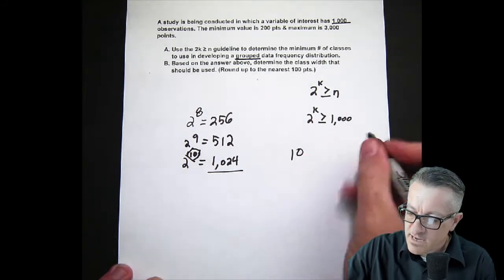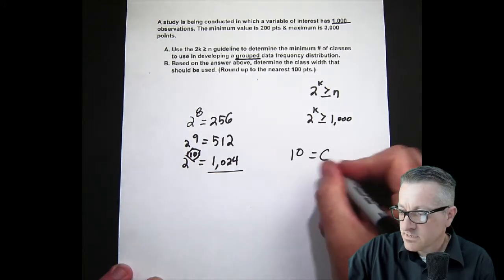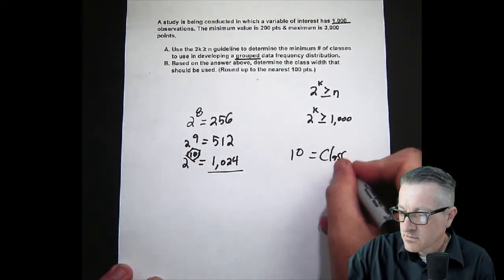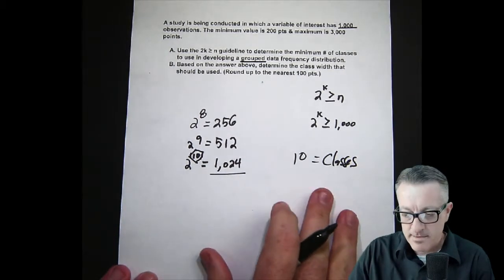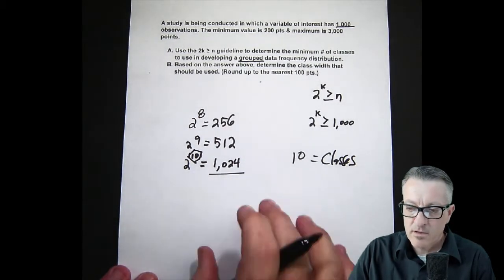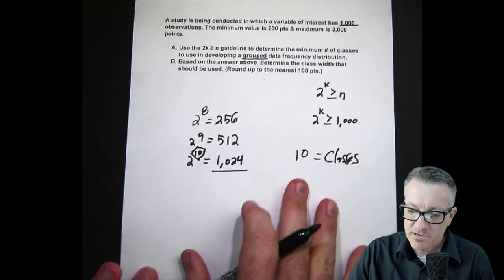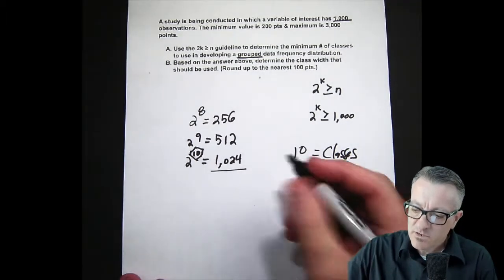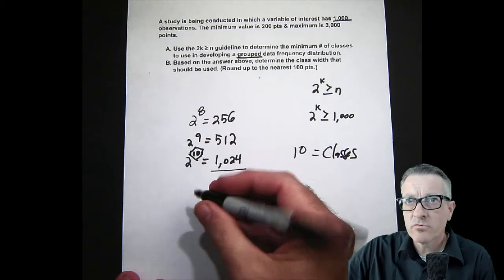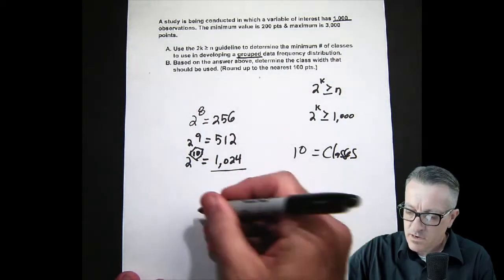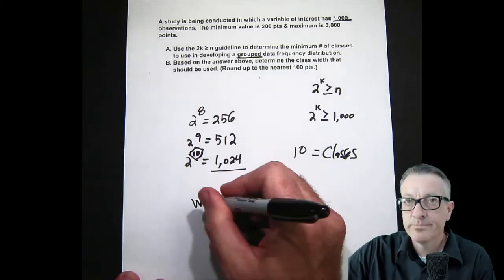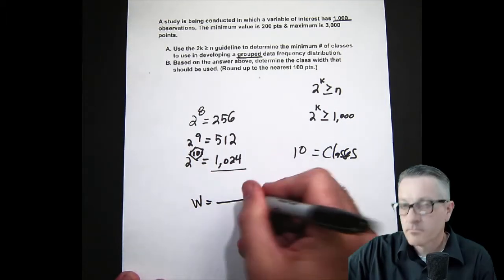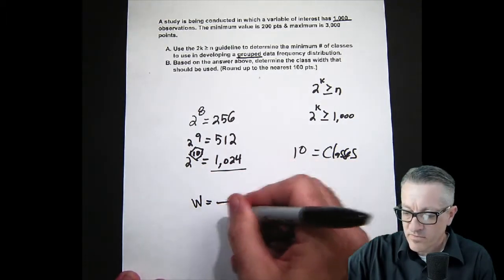Okay, we know that we have 10 classes. The next thing that we are going to do is figure out what the width of these classes or groups is going to be. So we need to determine that. So there's another rule that we can use.